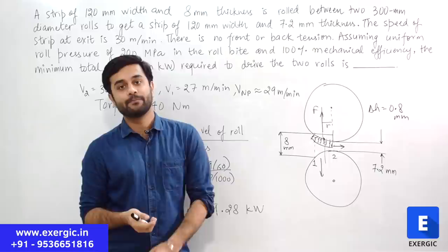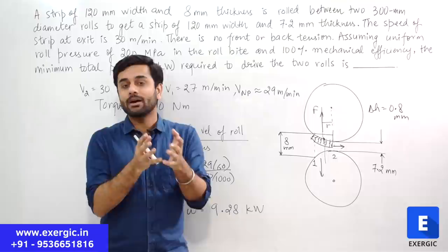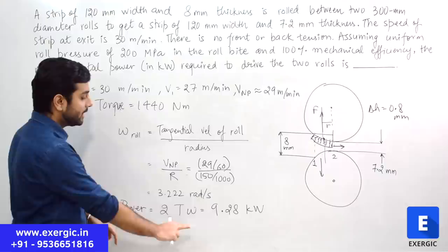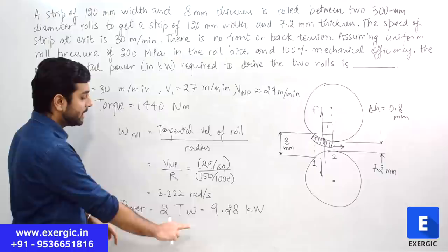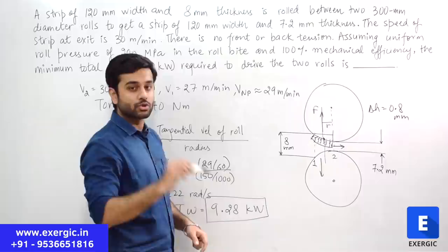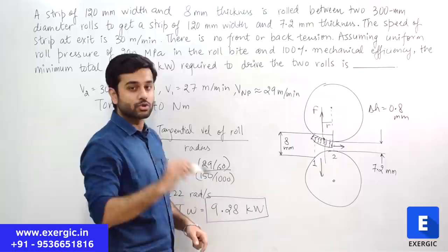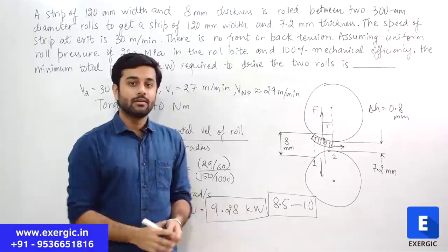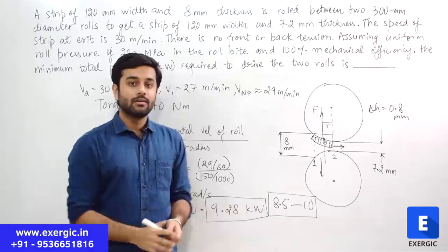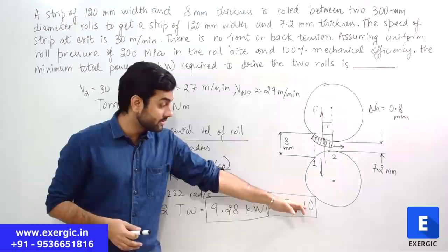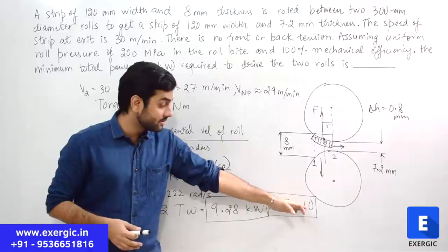To find total power, multiply T × ω and then double it — because there are two rolls and each demands power to be driven. So total power = 2 × T × ω. Doing that calculation gives 9.28 kW. The exact answer from GATE's key should be 9.25 kW (midpoint of the 8.5–10 range). Most other sources get 9.6 kW by incorrectly using the exit strip velocity for ω, which is a higher and incorrect value.